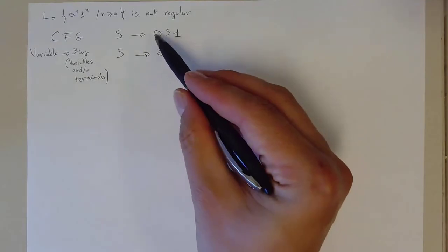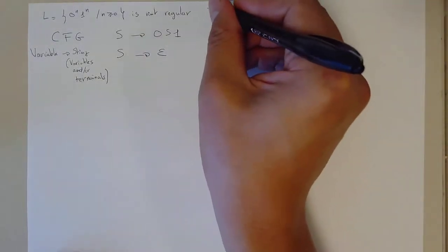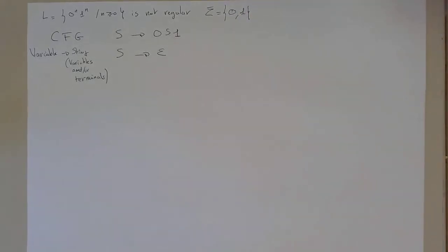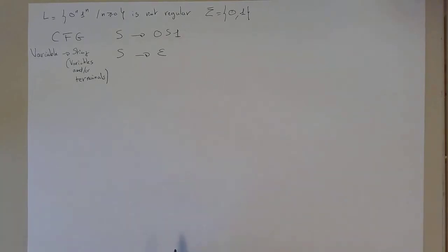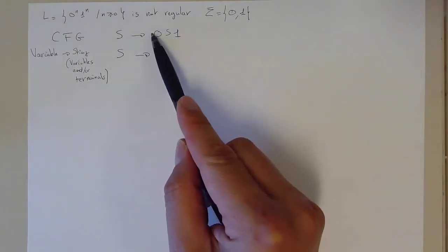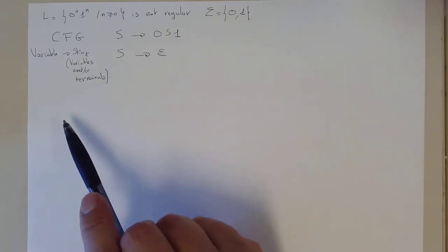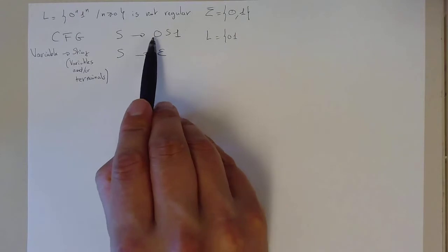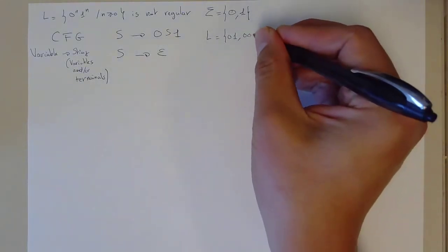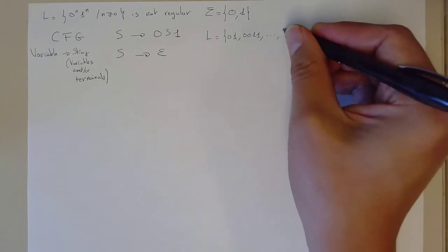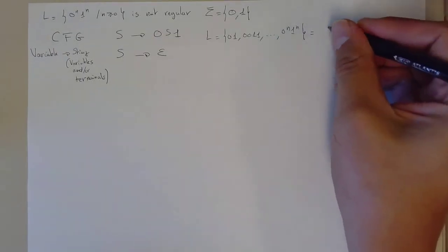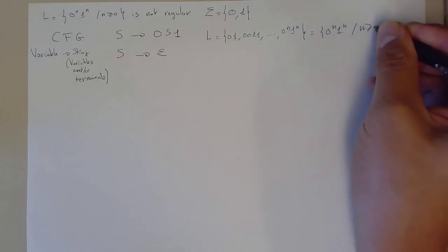The empty string, zero, and one are terminals. Our alphabet is {0, 1}. What does the CFG generate as a language? You follow the substitution rules: S can be replaced by 0S1 or by the empty string. So 01 is in the language. You can also replace S again by 0S1, so 0011 is in the language, and so on. The language is exactly 0^n 1^n for n greater than or equal to zero.